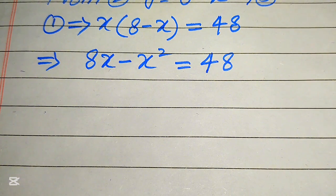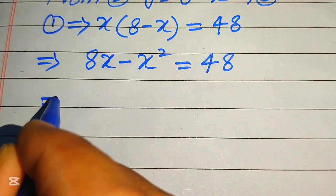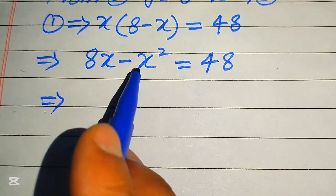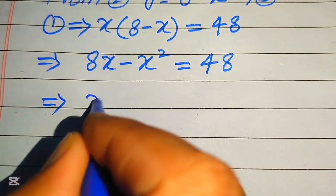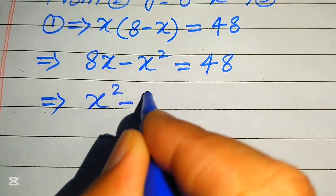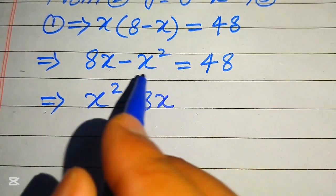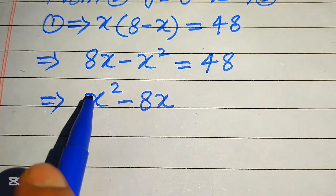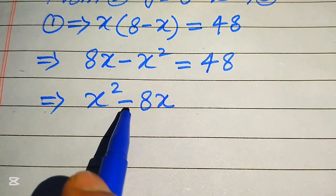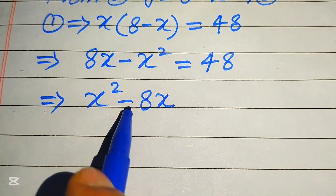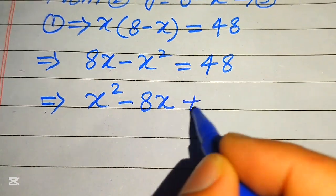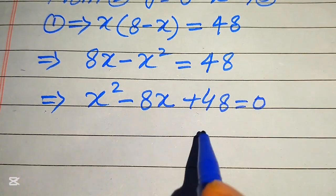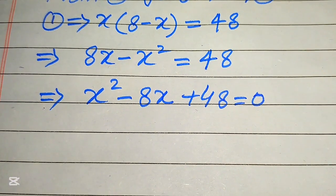Here we need to first convert this equation into the standard form. For this we move these two values to the right hand side: it will be written as x squared minus 8x — the negative value when moved to the right hand side becomes positive — plus 48, and this whole equation equals 0.